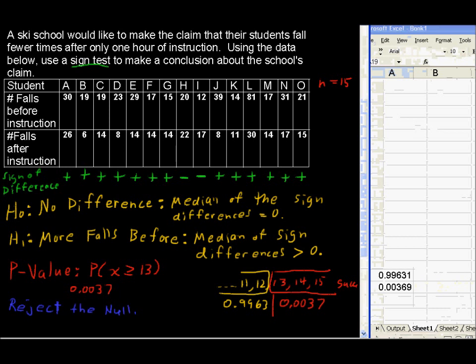Reject the null, and then we go on to say evidence suggests that there were more falls before, or that the ski school is helping the students get better. Students get better with this instruction. That was an example of a sign test.